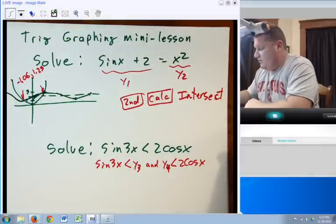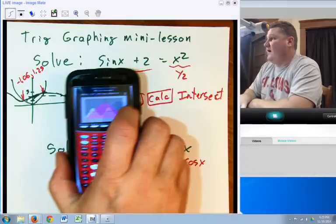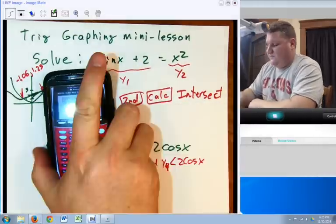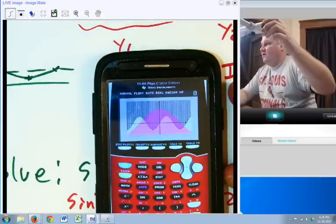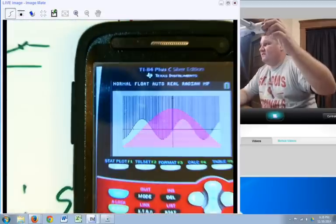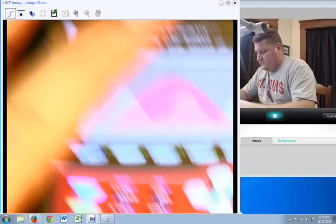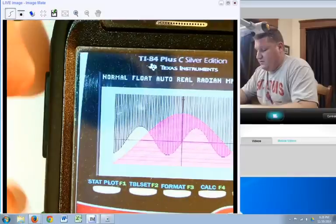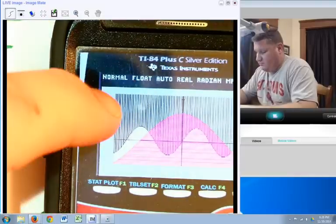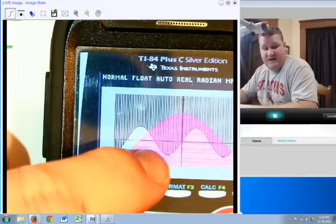When you graph them up, you get a graph that looks like this. And you can change it to the greater than or less than functions. So, in this case, you would say, well, where is the sine 3x greater than the 2 cosine x? Well, that's going to be where the sine 3x is higher than the cosine 2x.